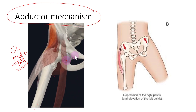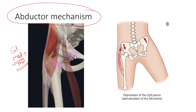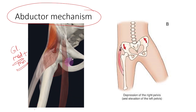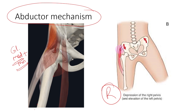The abductor mechanism is not only important for abduction of the hip joint — it is also important when you stand on one foot. For example, standing on the right foot, the abductor muscle arises here and attaches over here, and when it contracts it stabilizes the pelvic bone.